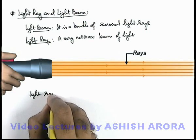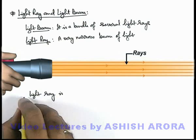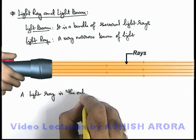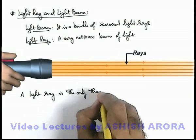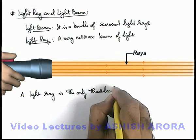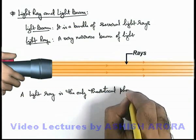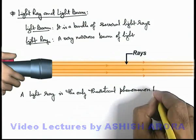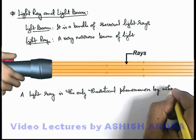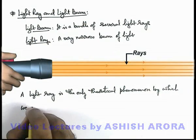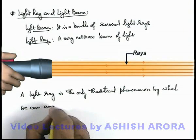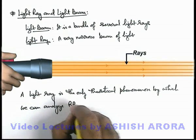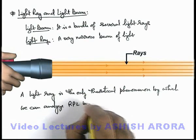A light ray is the only theoretical phenomenon by which we can analyze rectilinear propagation of light in detail.